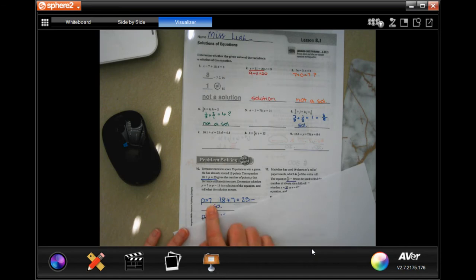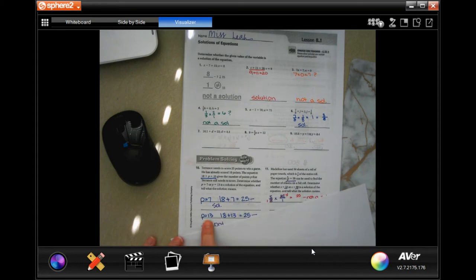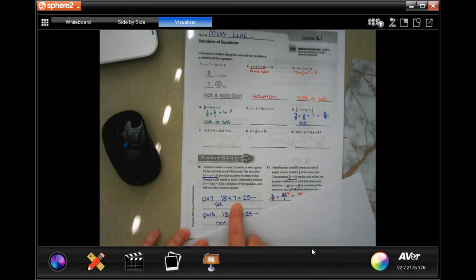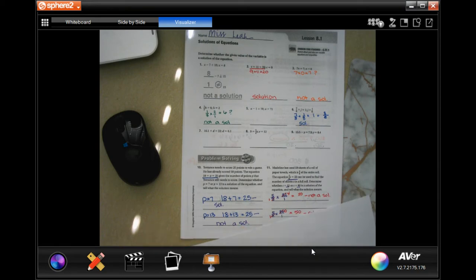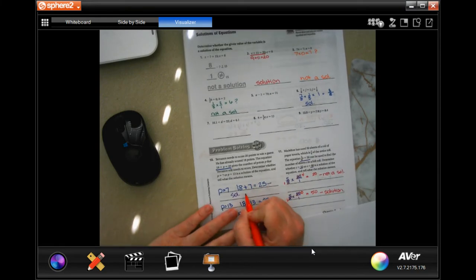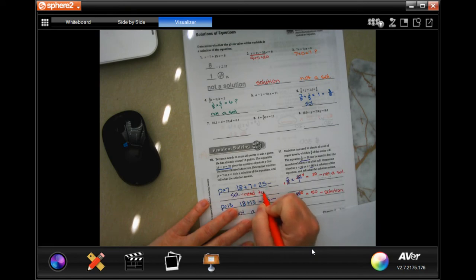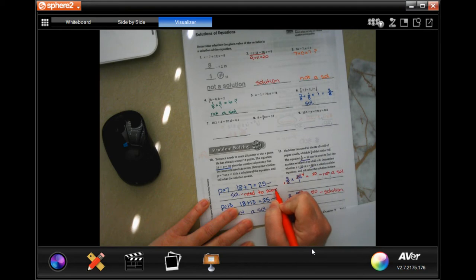So p equals 7 means 18 plus 7 is 25. Well, that's a solution because 18 plus 7 is 25. So p equals 13. Well, if 18 plus 7 is 25, then 18 plus 13 cannot be 25. So the only thing that I didn't do here would say needs to score 7 more points.